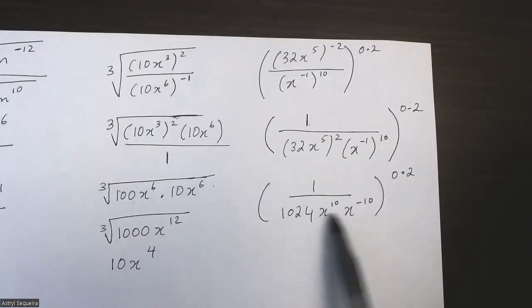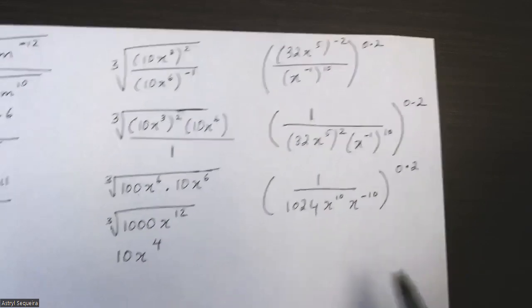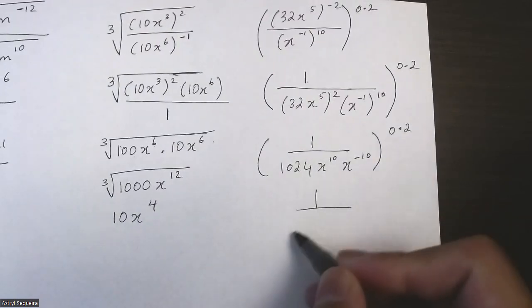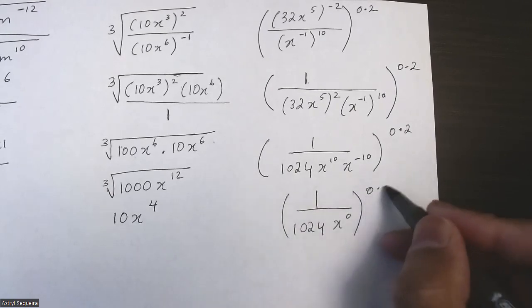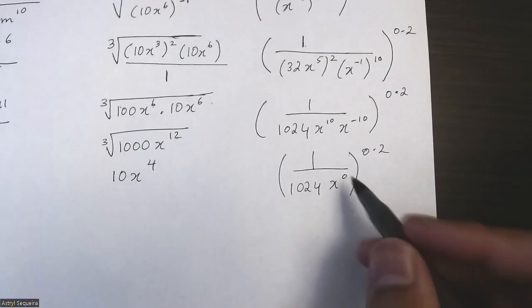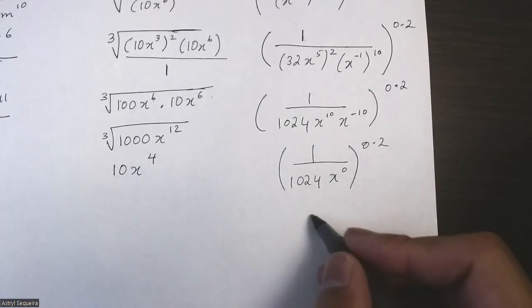The next thing we want to do is just combine these two denominators here. 10 plus negative 10 is just 0, and anything to the power of 0 is just 1.